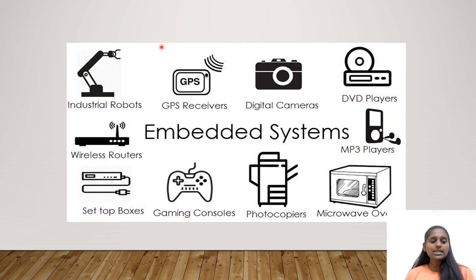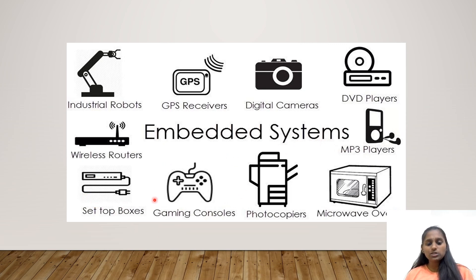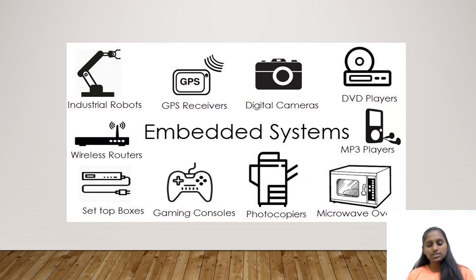These are examples of Embedded Systems: Industrial Robots, GPS Receivers, Digital Cameras, DVD Players, Wireless Routers, MP3 Players, Set-top Boxes, Gaming Consoles, Photocopiers, and Microwave Ovens. These are some examples of Embedded Systems.